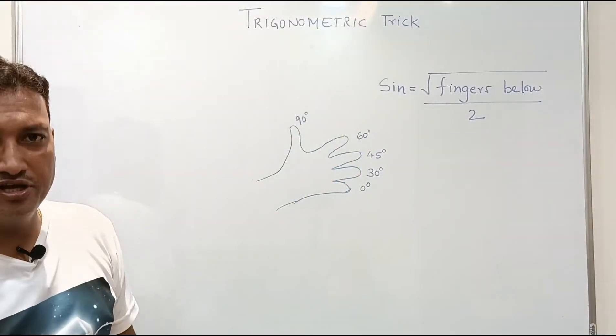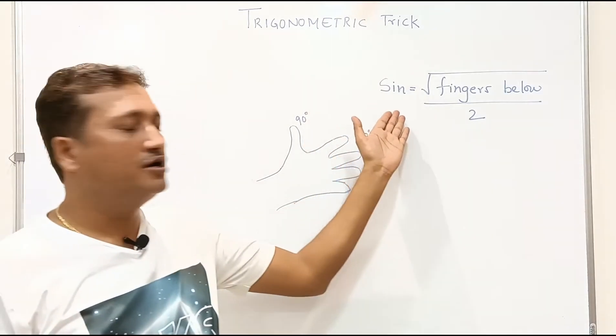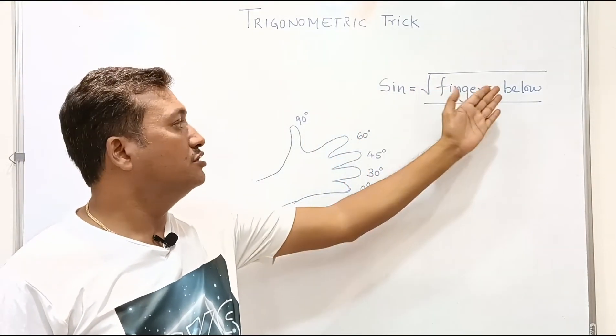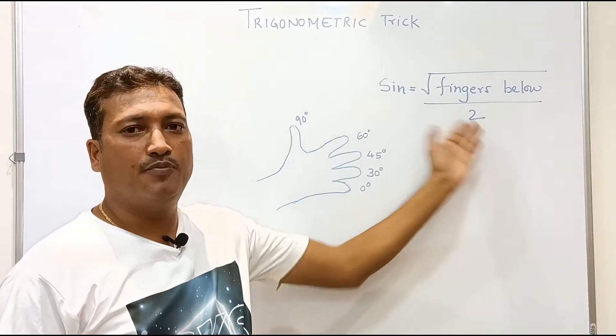Let's see how to find sine of any degree. Here we have a formula: sine equals square root of fingers below divided by 2.